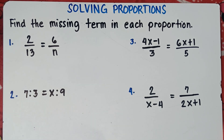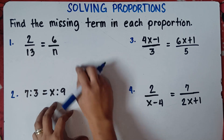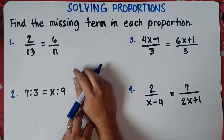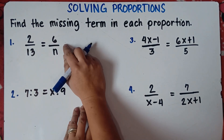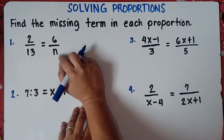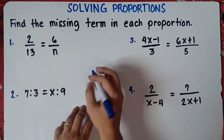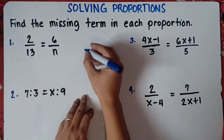So we are told to find the missing term in each proportion. Let's start with number one. For number one, class, we have 2 over 13 equals 6 over n. So we need to find the value of n. To find the value of n, let's do cross multiplication.